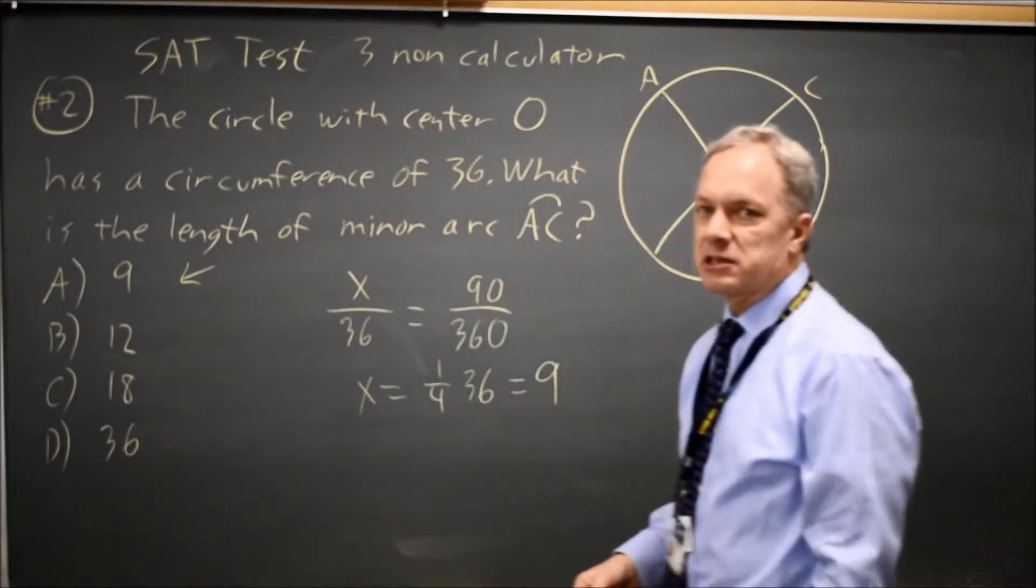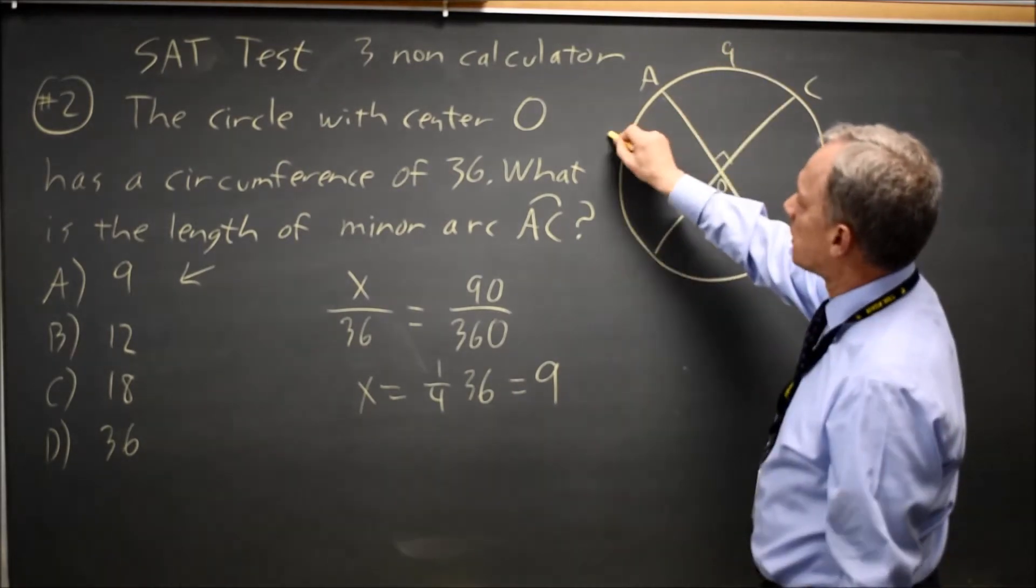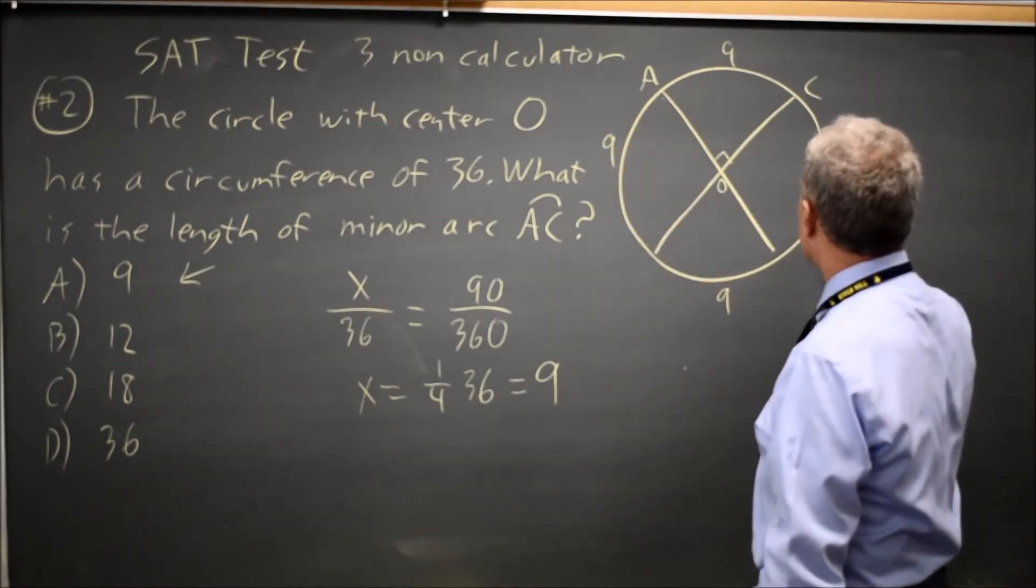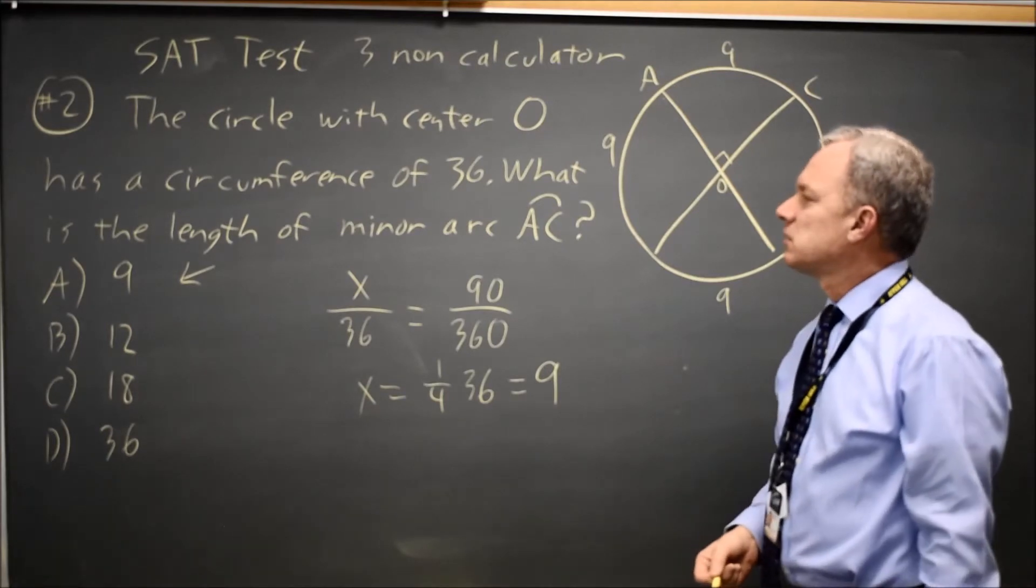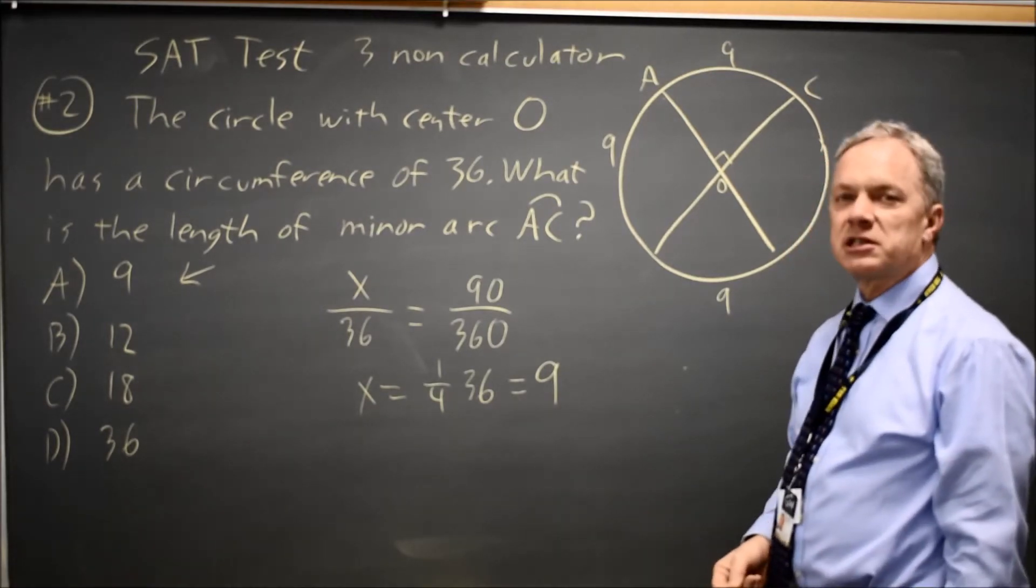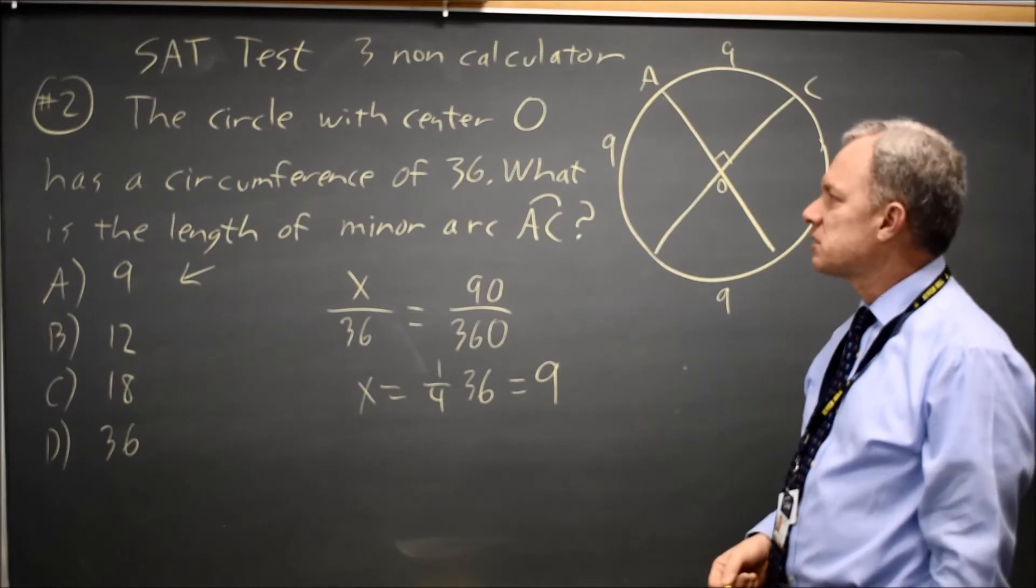And that makes sense because these look equal. If they were each 9, then the four minor arcs add up to 36, which is the entire circumference. So this answer makes sense.